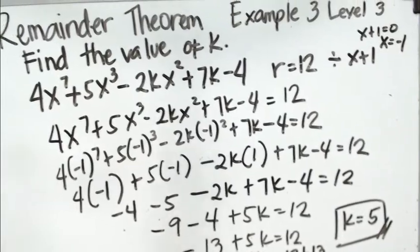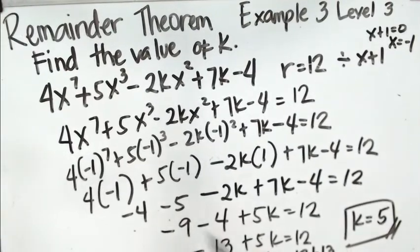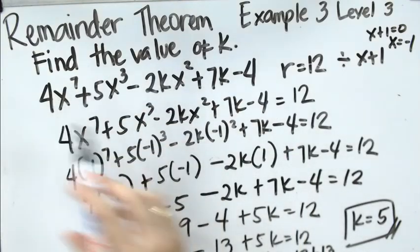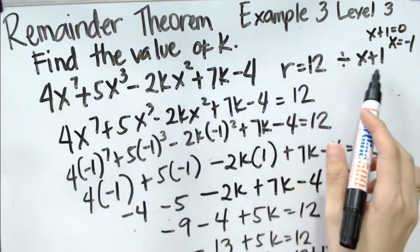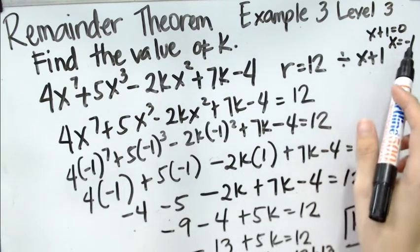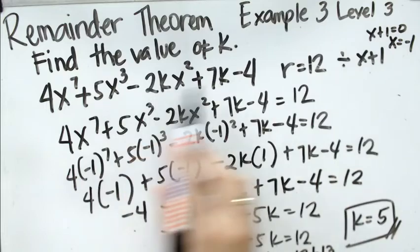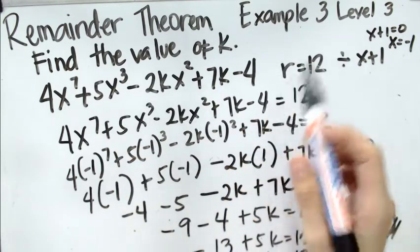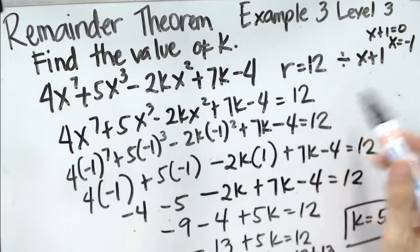Again, from the given problem, to find the value of k when the given polynomial has a remainder of 12 when divided by x plus 1, we equate the divisor, copy the given polynomial equals to the given remainder from the given problem, and then we equate.